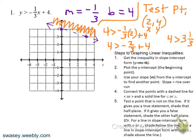Now, if you have the equation in slope-intercept form, instead of doing a test point you can use a shortcut. Less than or less than or equal to — shade below. Greater than or greater than or equal to — shade above. This is greater than, so we shade above. Make sure it's in slope-intercept form to use this shortcut.